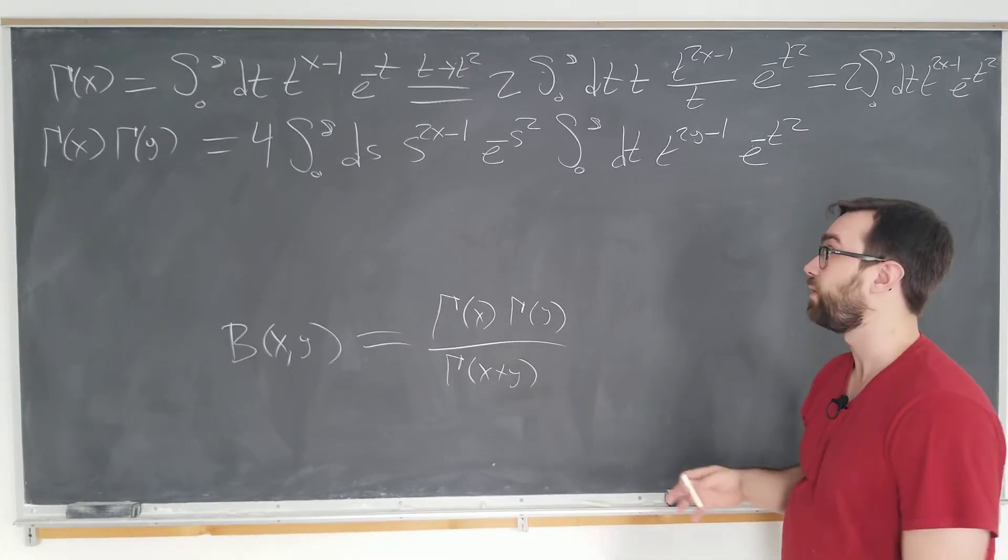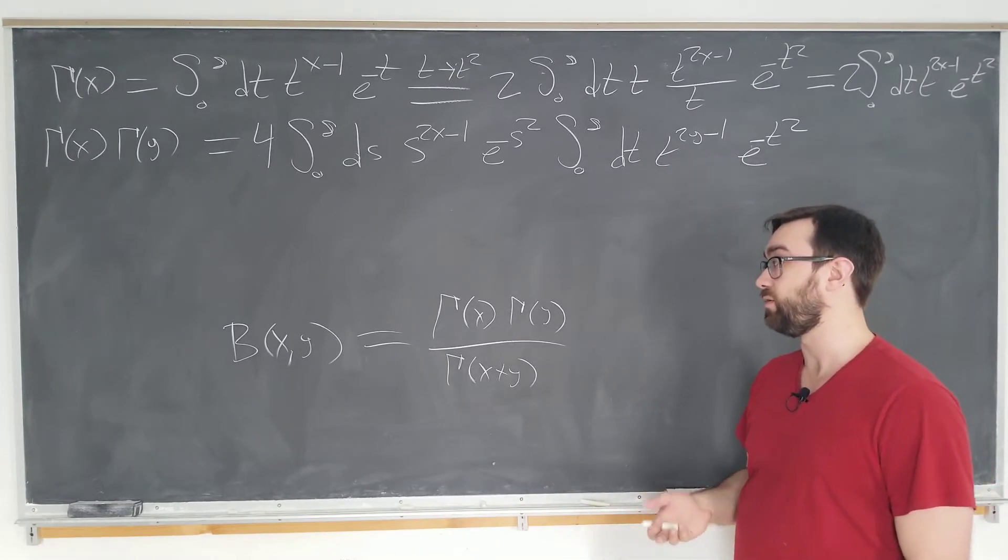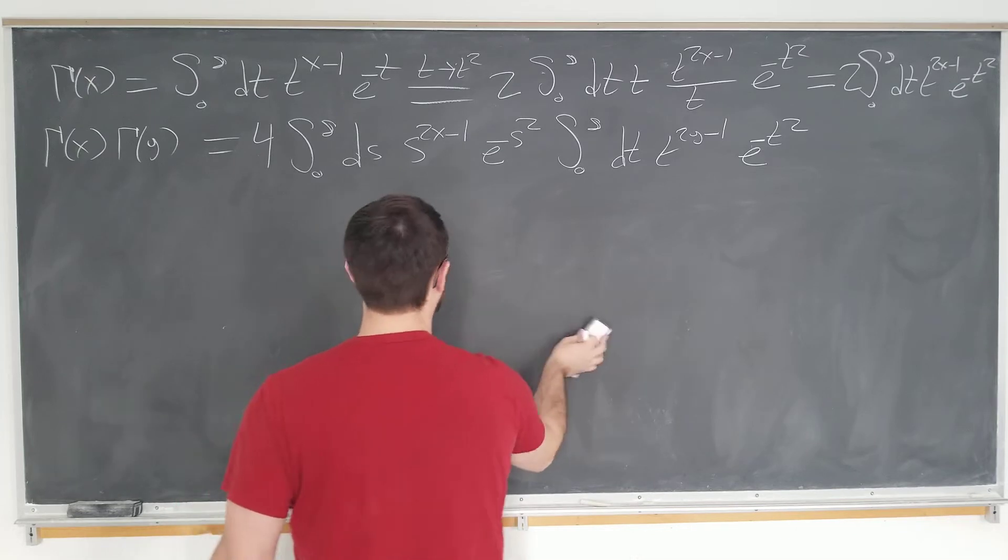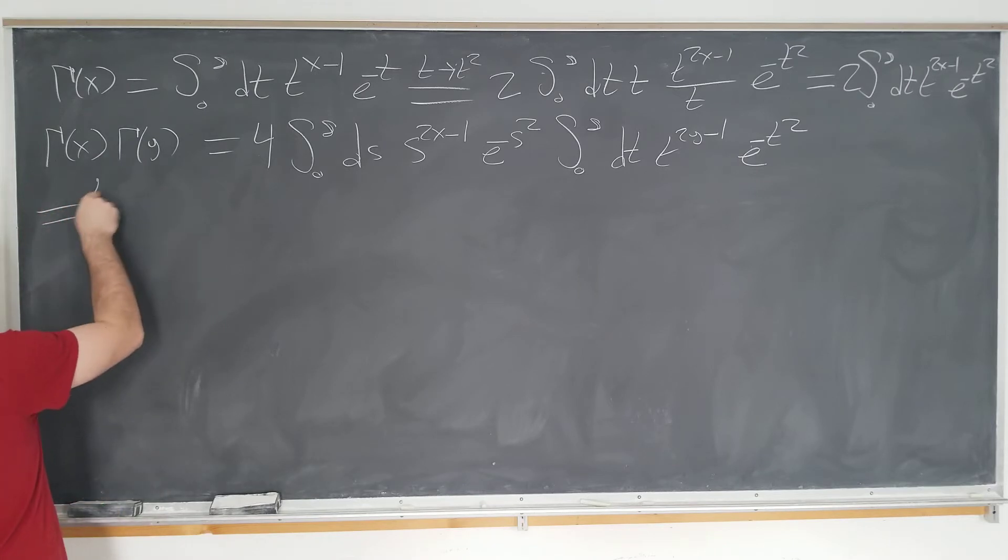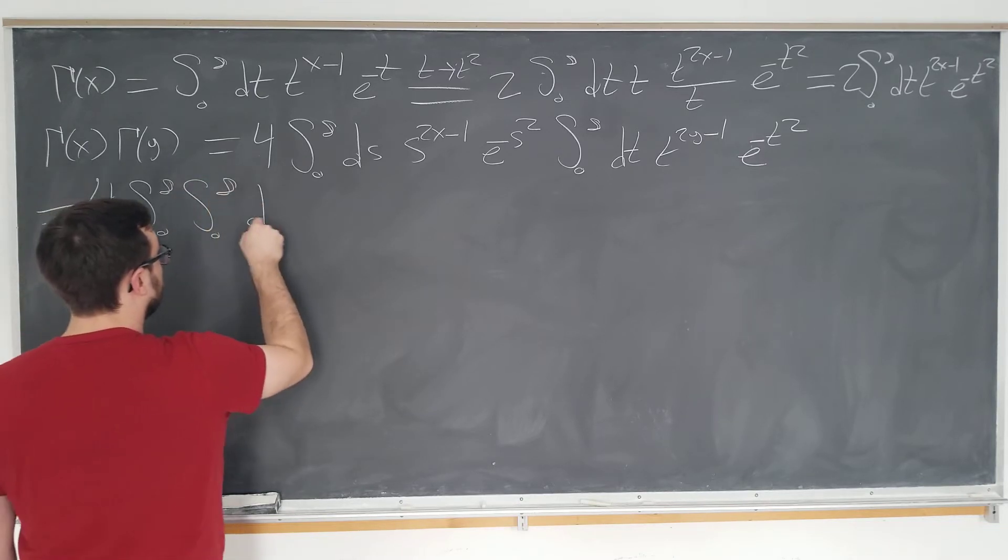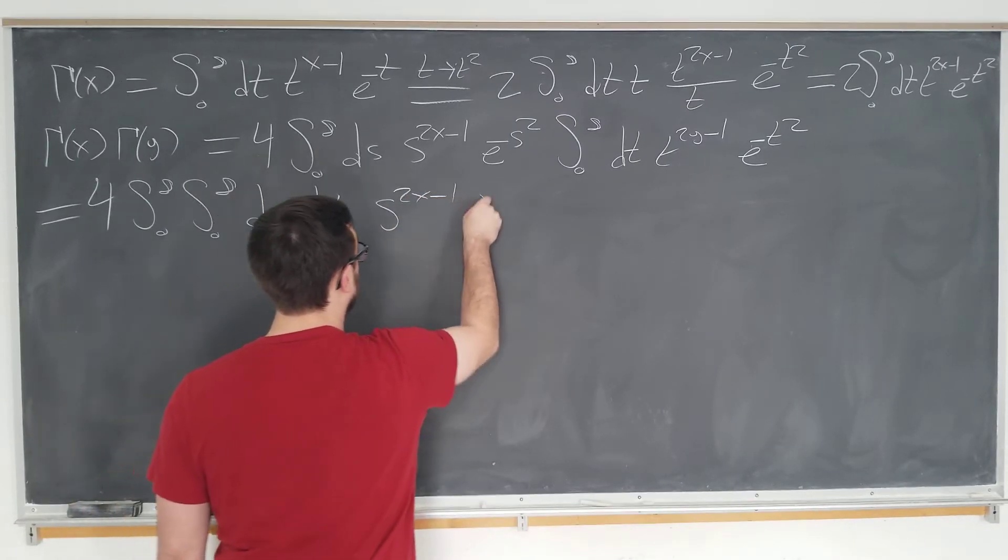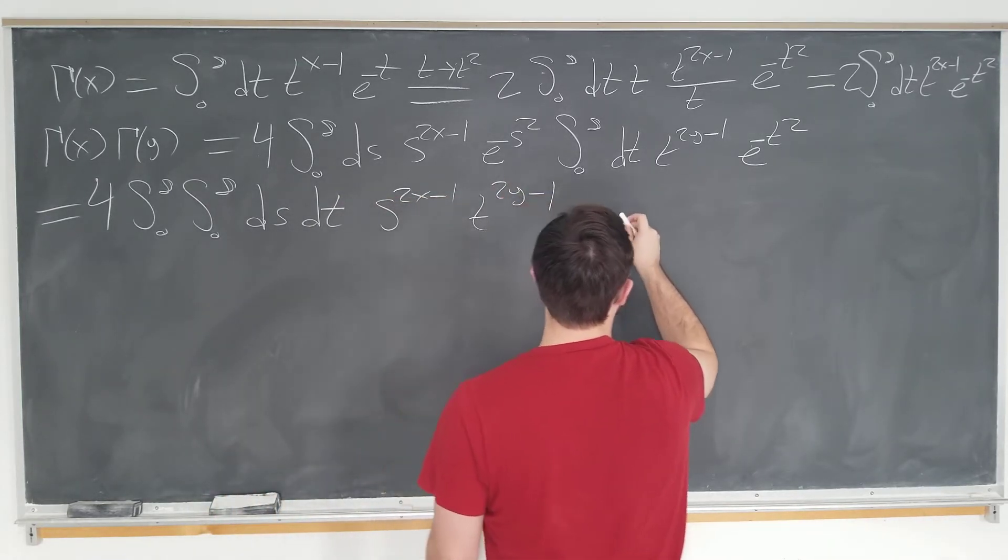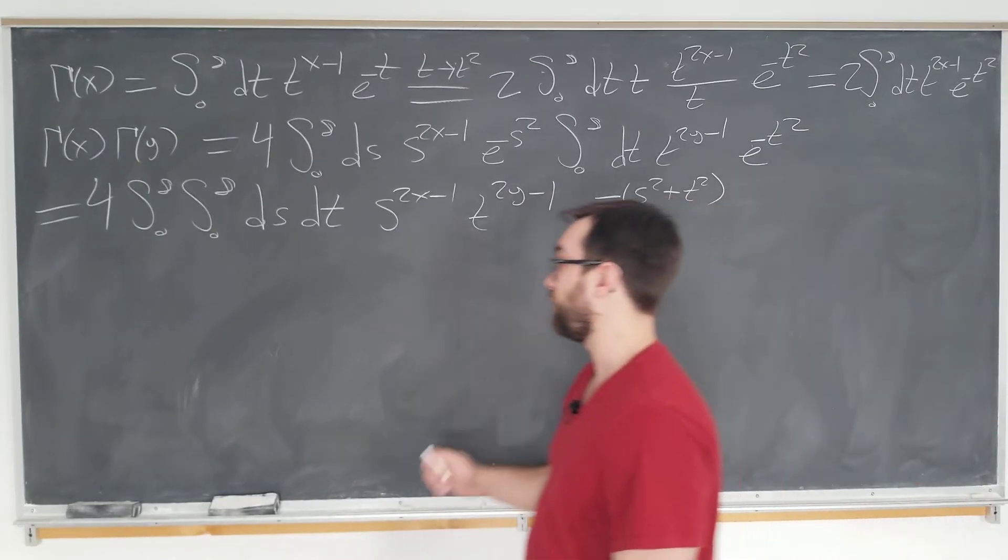Four times the integral from zero to infinity. New variable s. We're going to have variables s and t here for our multivariable integral. And we're going to have s to the 2x minus 1 e to the minus s squared. We're going to have another integral with our variable t. And we're going to have t to the 2y minus 1 e to the minus t squared. Now, some of you might see where we're going. When we combine the exponentials, we have s squared plus t squared, which invites us to use a polar coordinate transformation, which we're going to do now.